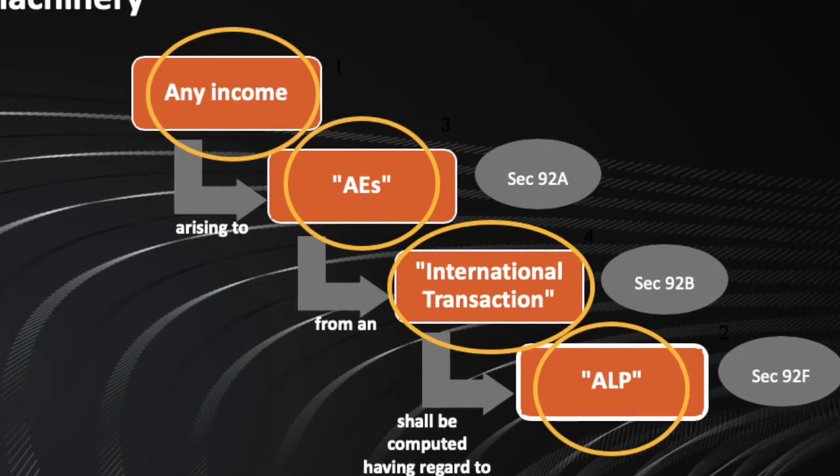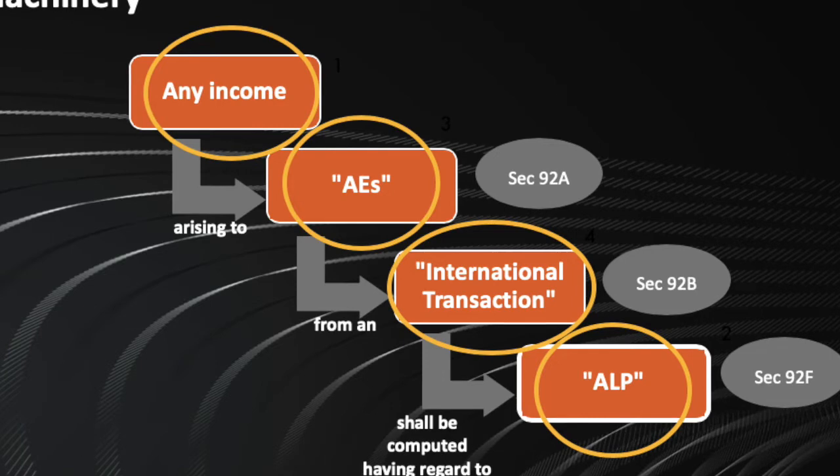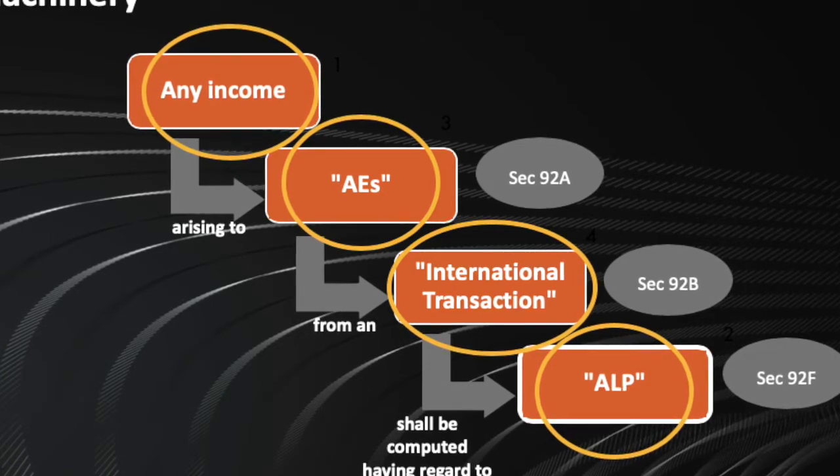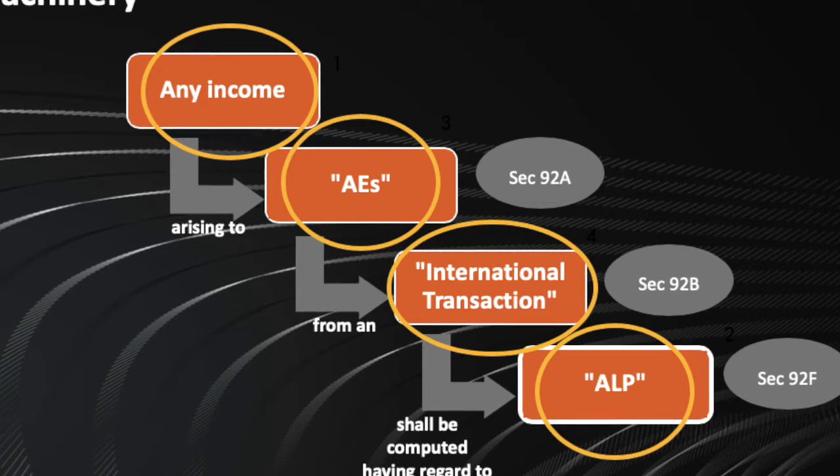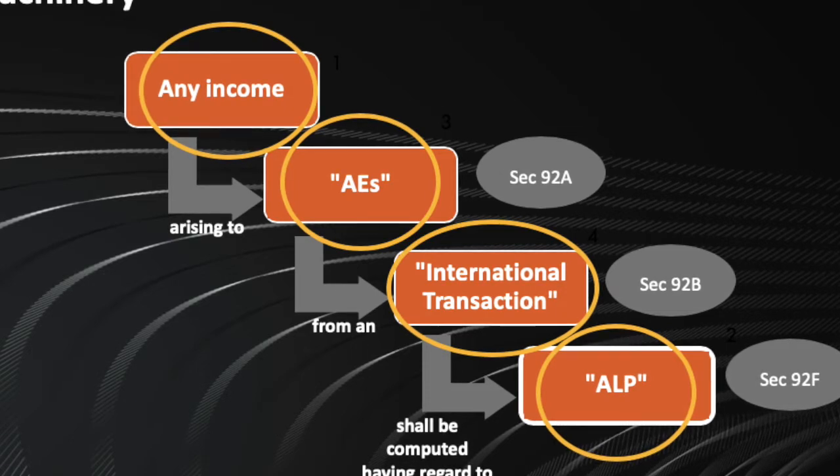It's very important to understand the meaning of 'shall be computed' - it means it's a necessary computation having regard to the arm's length price. There are typically six methods for determination of arm's length price and there cannot be any seventh method for computation. Only the methods which are prescribed needs to be looked into.